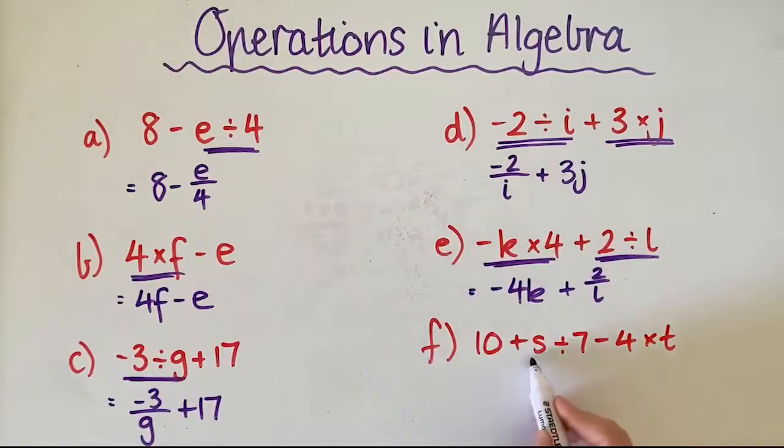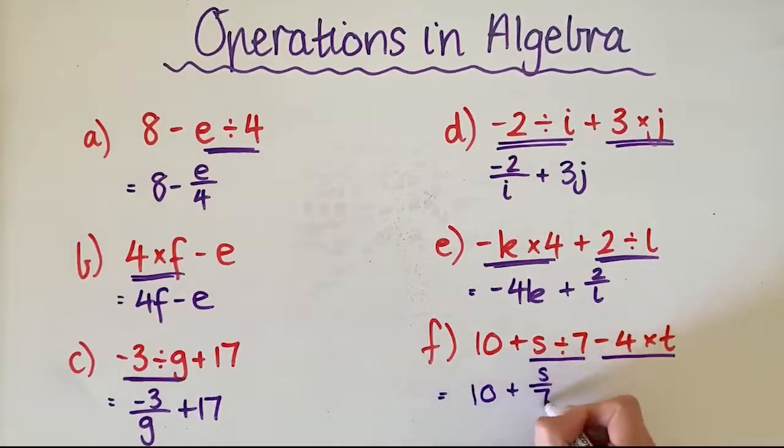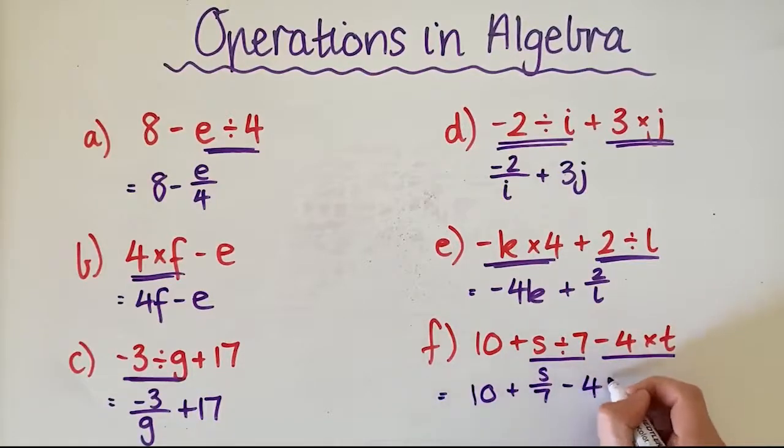And in this last one, you can see we've got a division here and we've got a multiplication here. So it becomes 10 plus S divided by 7 minus 4T.